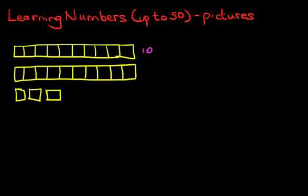The second row is another row of 10 blocks. So now we've got 20 blocks. And how many do we have at the bottom? We've got 1, 2, 3. So the total number of blocks we have are 23.